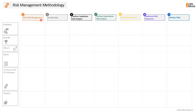The seven steps of a risk management methodology will start with planning risk management, then we will identify the project risks, then we will perform the qualitative or subjective analysis, quantitative or objective risk analysis, and then planning the proper risk responses, implementing risk responses, and finally we will monitor and close the project risks.